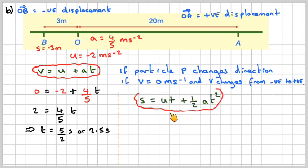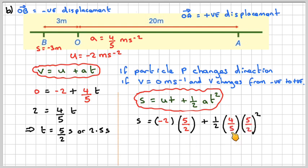So, using S equals UT plus half AT squared, when T equals 2.5, we're going to have minus 2, the initial velocity, times the time, which is 2.5 or 5 over 2, plus half times the acceleration, which is 4 fifths, times 5 over 2 squared, and that will give you that the displacement at that time will be minus 2.5.